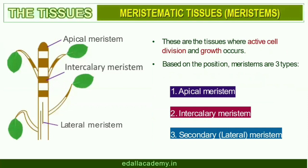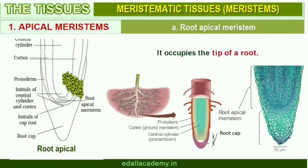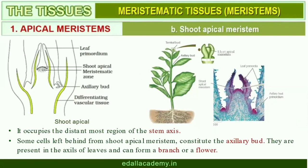Meristematic tissues: Growth in plants is largely restricted to specialized regions of active cell division called meristems, from the Greek word 'meristos' meaning divided. The meristems which occur at the tips of roots and shoots and produce primary tissues are called apical meristems. Root apical meristem occupies the tip of a root, while the shoot apical meristem occupies the distal-most region of the stem axis.